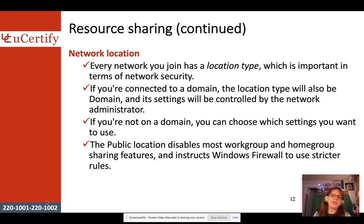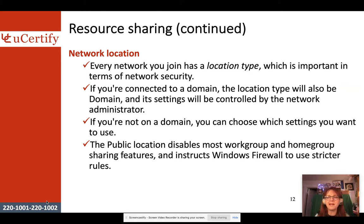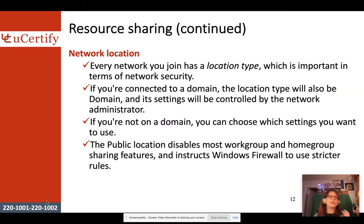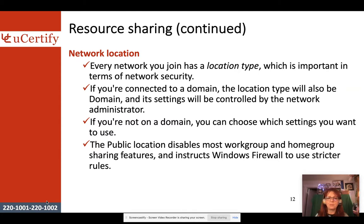Every network you join has a location type, which is important for network security. When connecting to a new network, especially WiFi, Windows asks whether it's a public or private network. If connected to a domain, the network administrator controls this setting. For non-domain users, you choose public or private yourself.